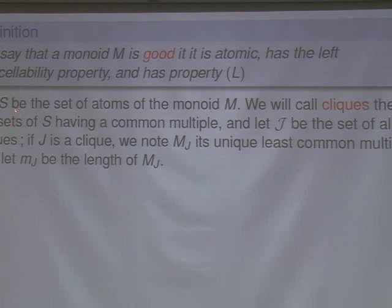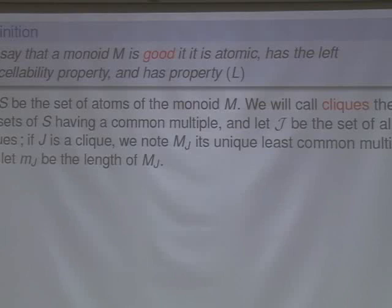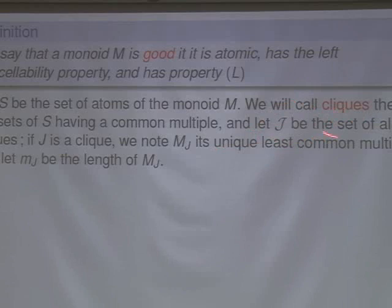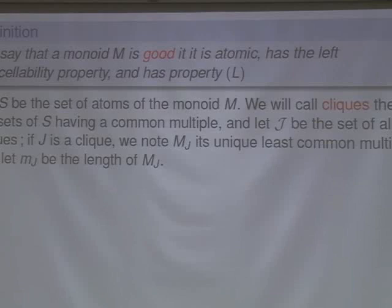Some notations: if S is the set of atoms of the monoid M, we will call cliques the subsets of atoms such that they have a common multiple — the ones that appear in property L. We will call J the set of all cliques. If J is a clique, we will note MJ as this unique least common multiple that it has. It is unique because of the left cancelability property, so there's uniqueness of this least common multiple.